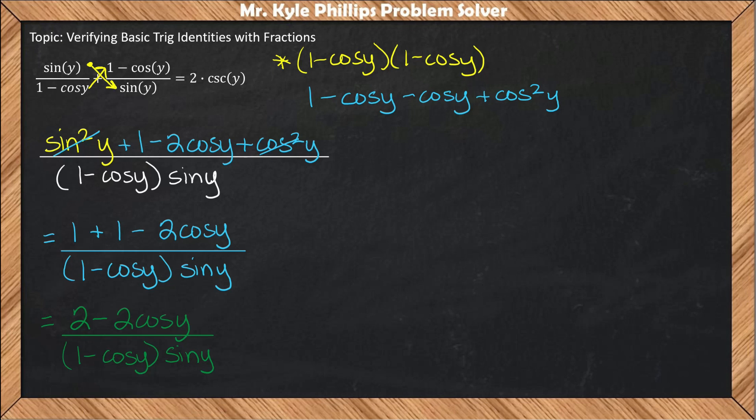Now it doesn't seem very obvious how we could continue simplifying this numerator. Normally if you can't think of replacing anything with an identity, try using basic rules of algebra. In this case it looks like I could pull out a greatest common factor of 2.